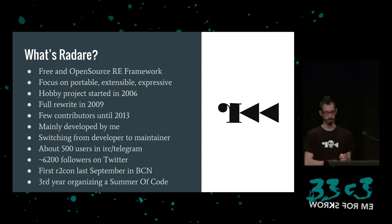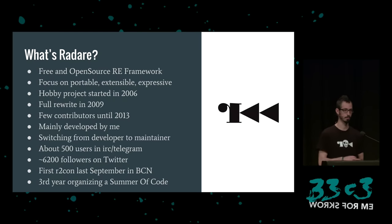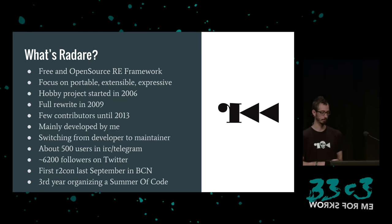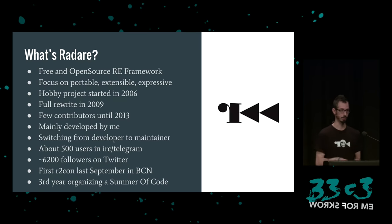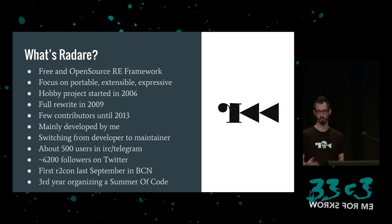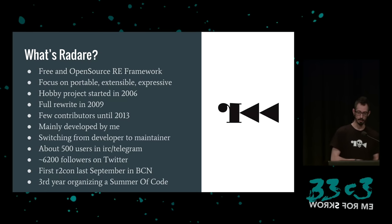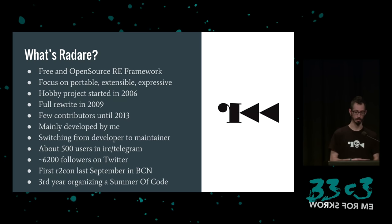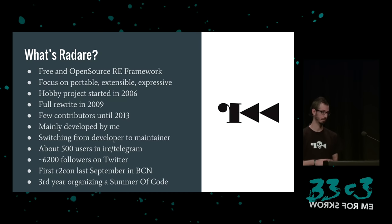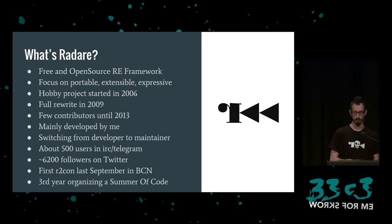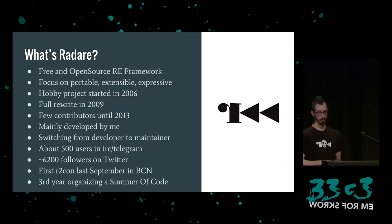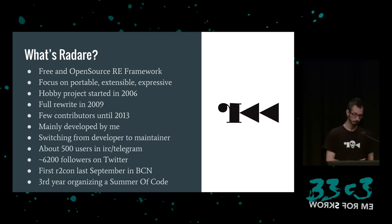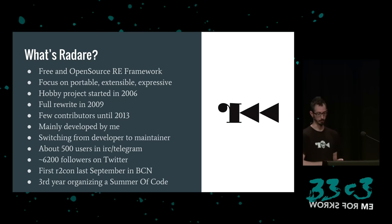I rewrote it as Radare 2 three years later, mainly because it had become a big blob. I decided to make it more modular, implementing different libraries and supporting different scripting languages in a better way — instead of launching the interpreter from inside the project, just exposing the APIs and allowing other libraries to use the project. There were few contributors until three years ago, but now there are many: 500 users in Telegram and IRC, more than 5,000 Twitter followers. This year I organized the first congress about the tool in Barcelona.